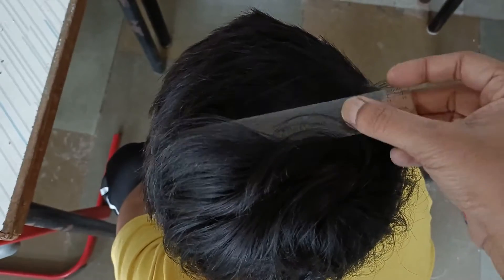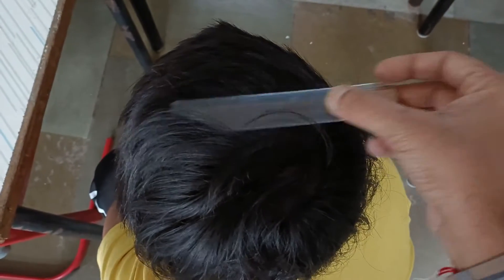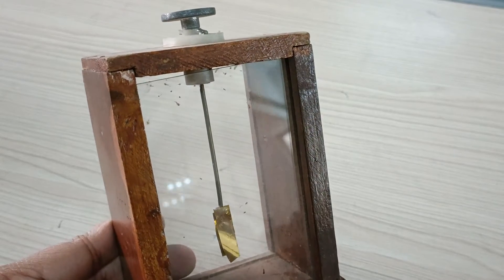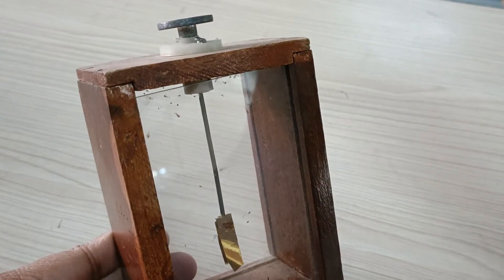We will rub the plastic scale against the dry hairs. Due to this friction, the loosely bound electrons from the hairs shed into the plastic scale, making it negatively charged.